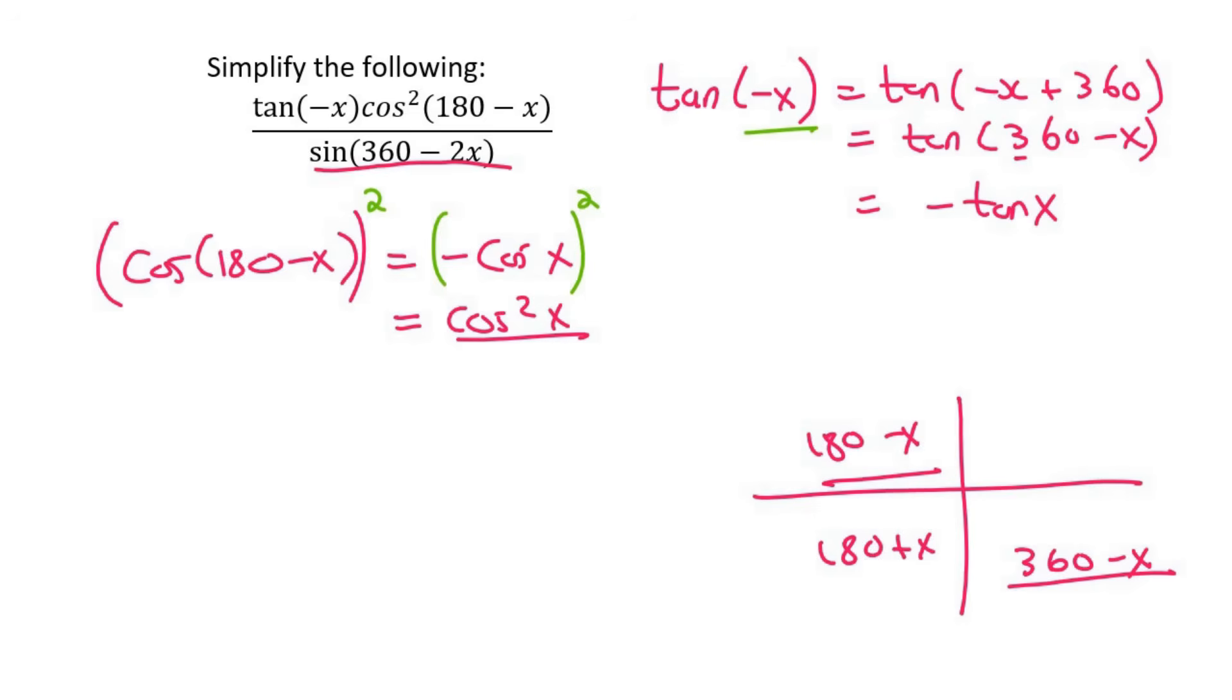And then the next part is sin 360 minus 2x. Now 360 minus any type of angle is on our diagram. And so we know that sin of 360 minus 2x is just going to become sin of 2x. But something I nearly forgot to mention was that sin is negative in that quadrant, so we'll put a little negative in the front.